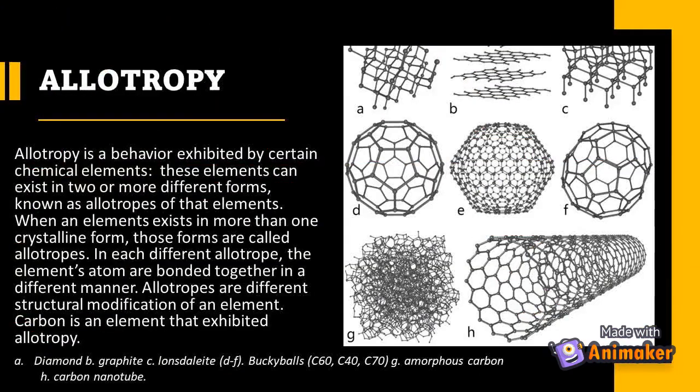Allotropy is a behavior exhibited by certain chemical elements. These elements can exist in two or more different forms known as allotropes. When an element exists in more than one crystalline form, those forms are called allotropes, and in each different allotrope the element's atoms are bonded together in a different manner. Allotropes are different structural modifications of an element. Carbon is an element that exhibits allotropy. Examples of carbon allotropes include diamond, graphite, fullerenes, buckyballs, amorphous carbon, and carbon nanotubes.